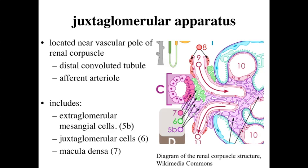The juxtaglomerular apparatus — 'juxta' meaning near the glomerulus — is a structure that's going to be close to the glomerulus within the capillaries. We're going to be looking at a structure located near the vascular pole of the renal corpuscle. Its components include a portion of the distal convoluted tubule as well as a portion associated with the afferent arteriole.